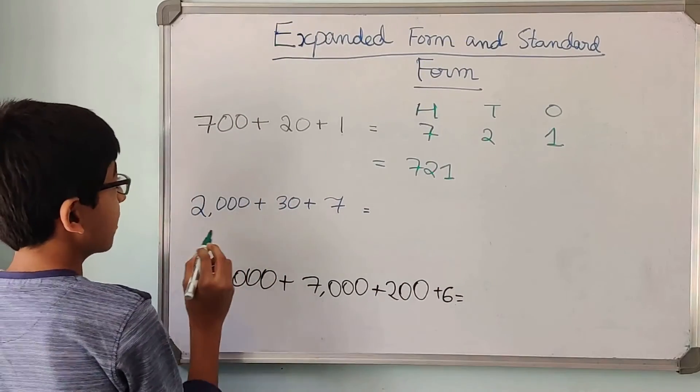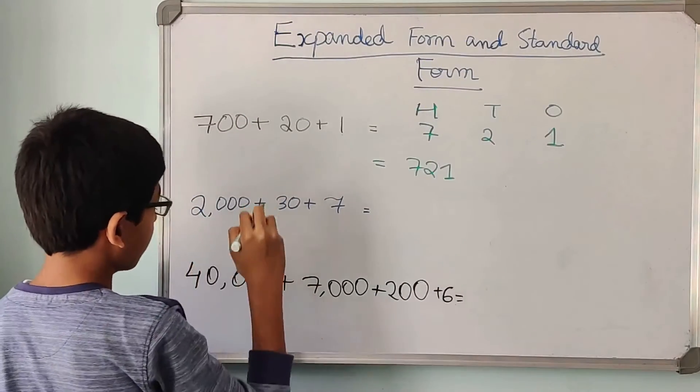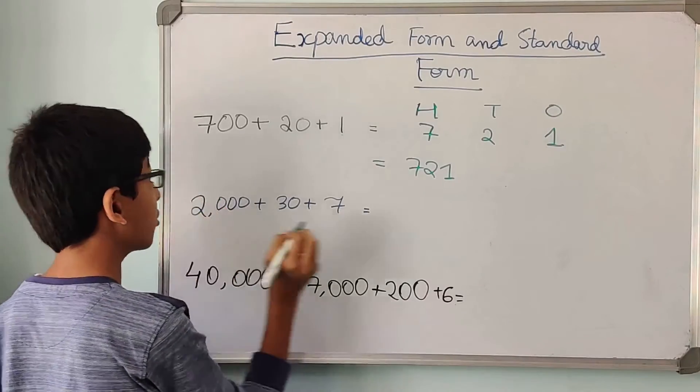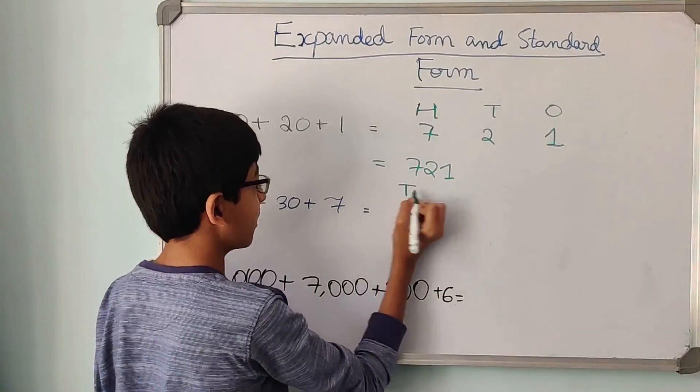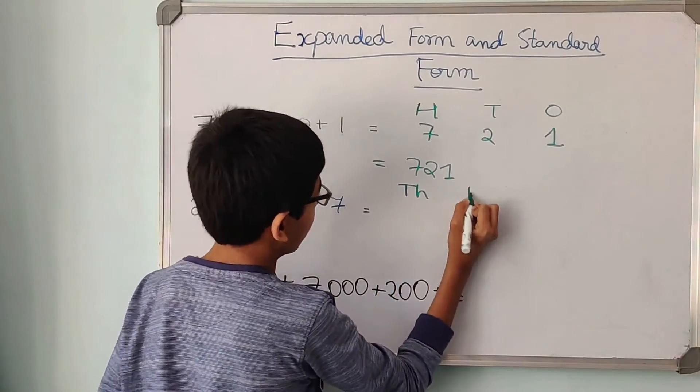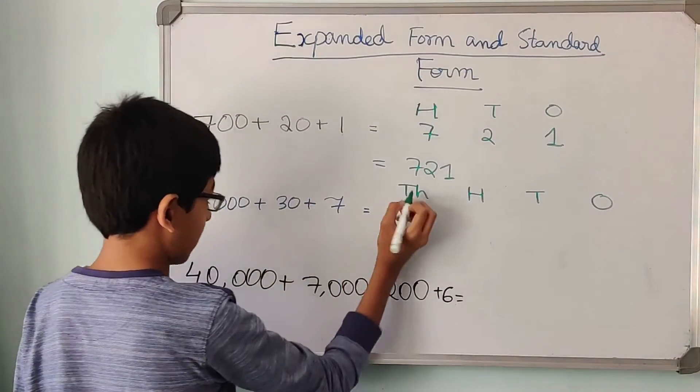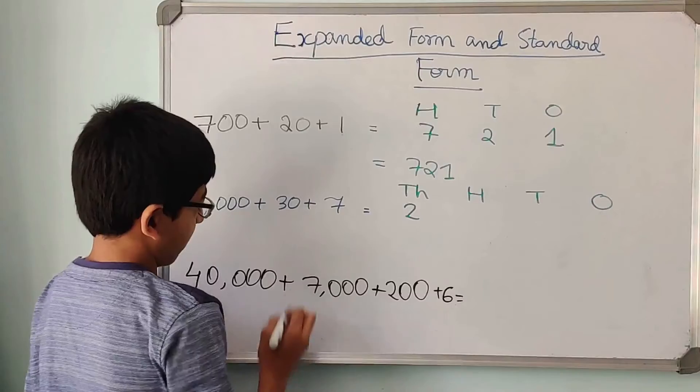Now let's solve the next question. 2000 plus 30 plus 7. So the biggest place is the thousands place. So we can write thousands, then hundreds, then tens and ones. So 2000, we will write 2 over here.